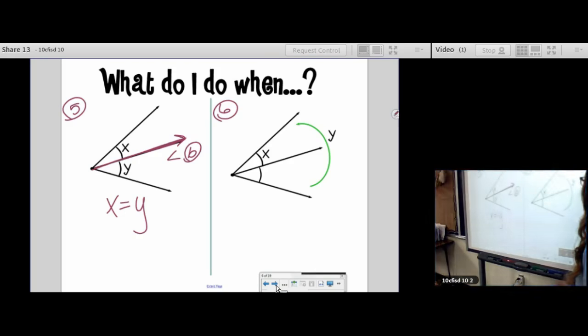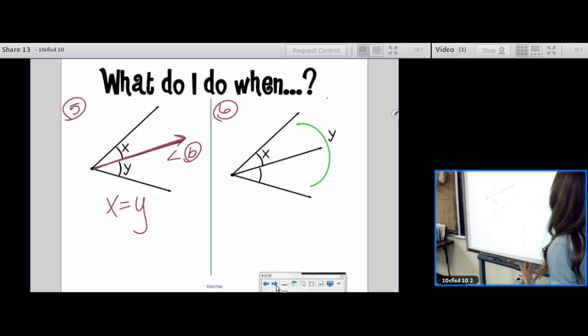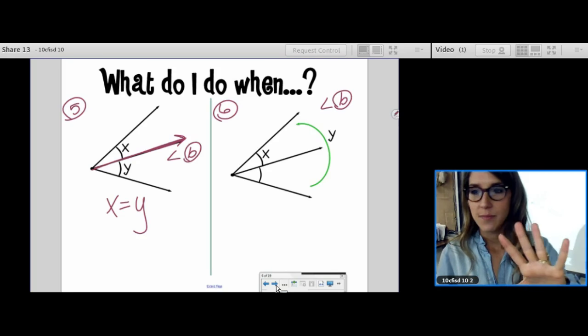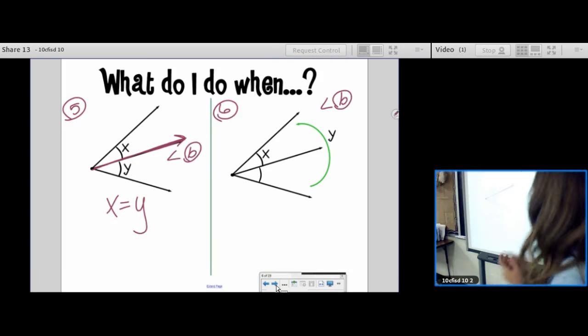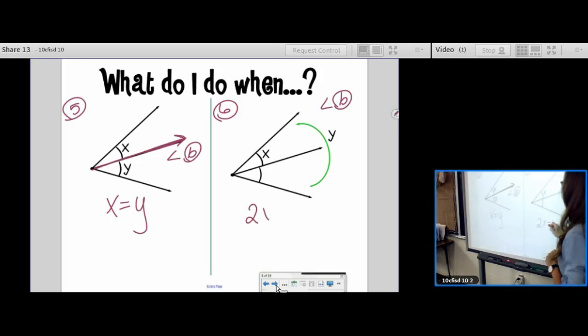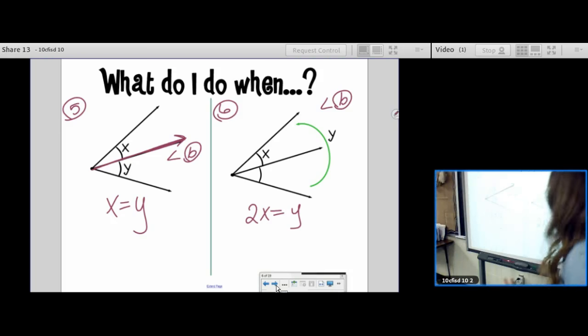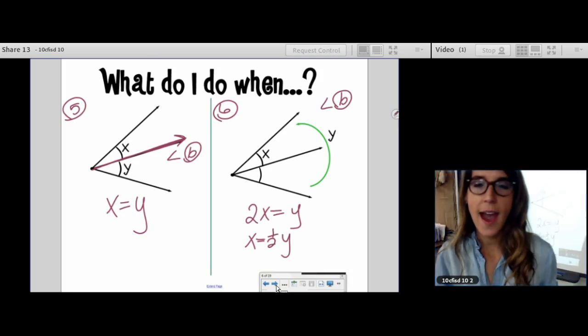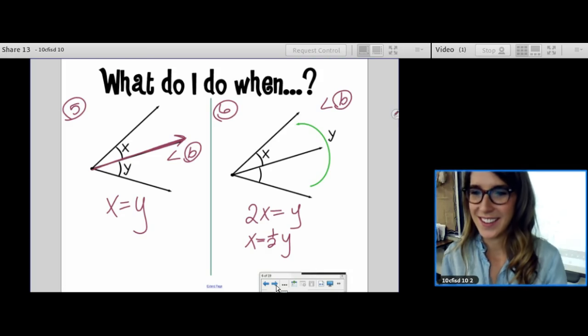Number six. We have two choices. Once again, we have an angle bisector problem, but they gave us different information. They gave us x, which is half, and they gave us y, which is the entire angle. So yes, you have two choices. You can double the half to equal the whole, or you can set the half equal to half of the whole. So, double the half or half the whole. You never do both. You just pick one of those.